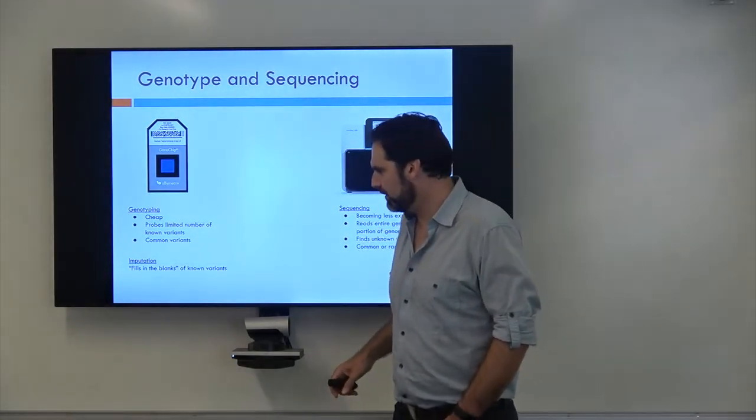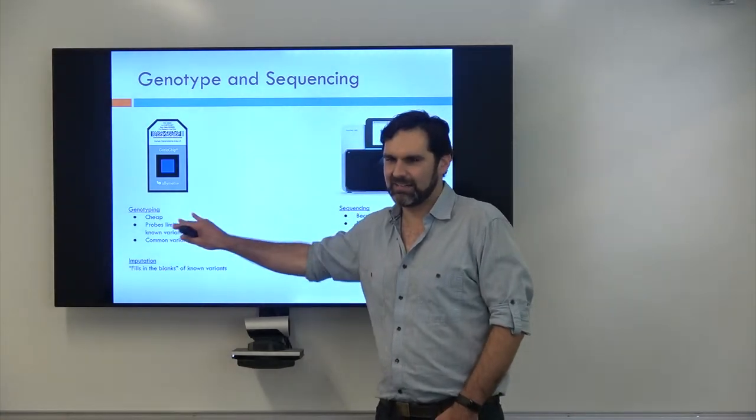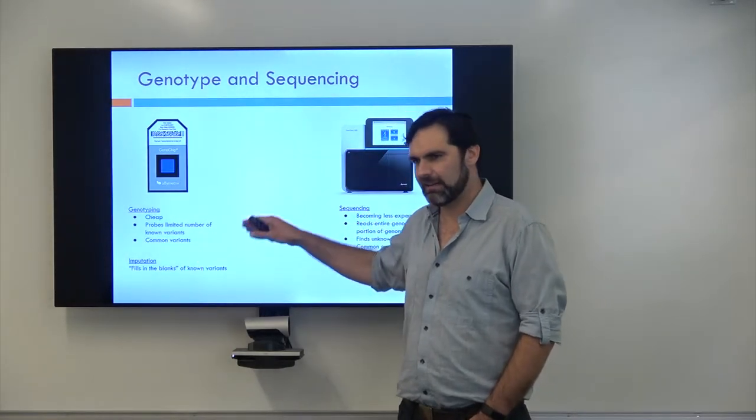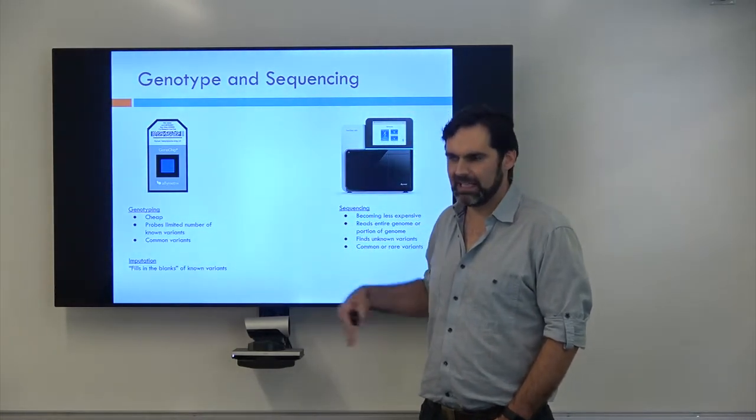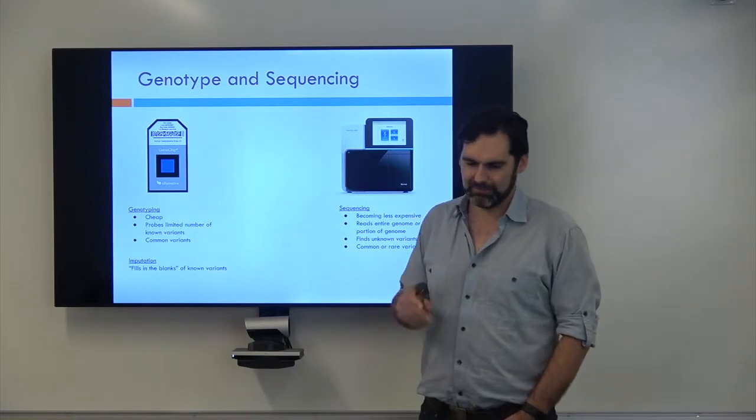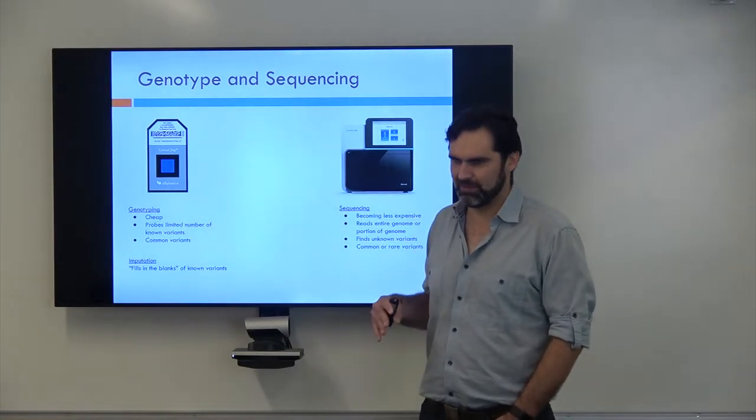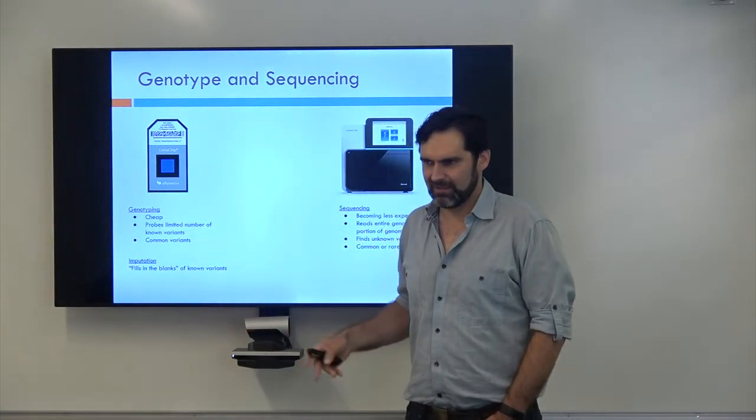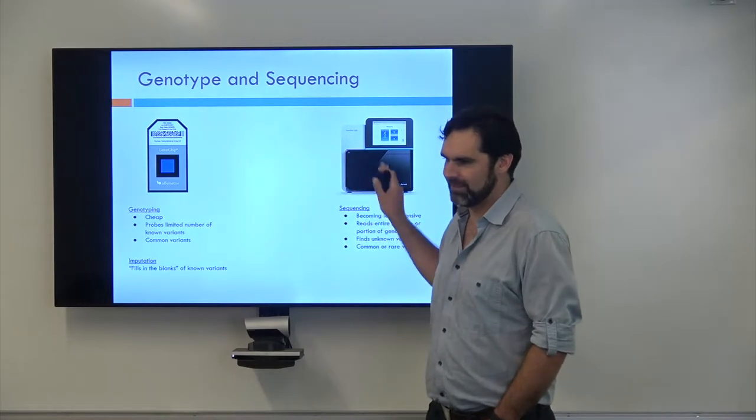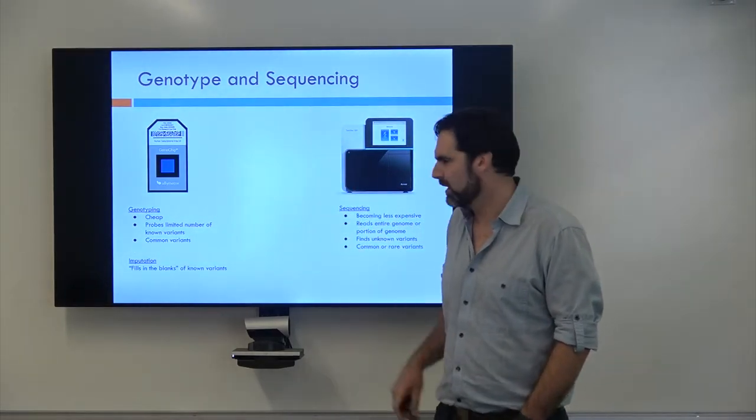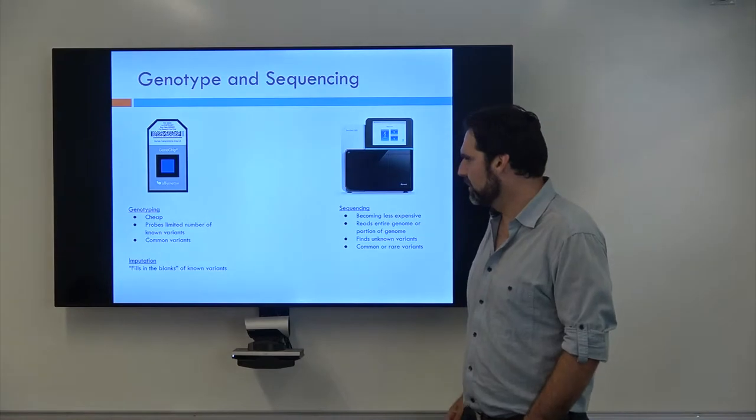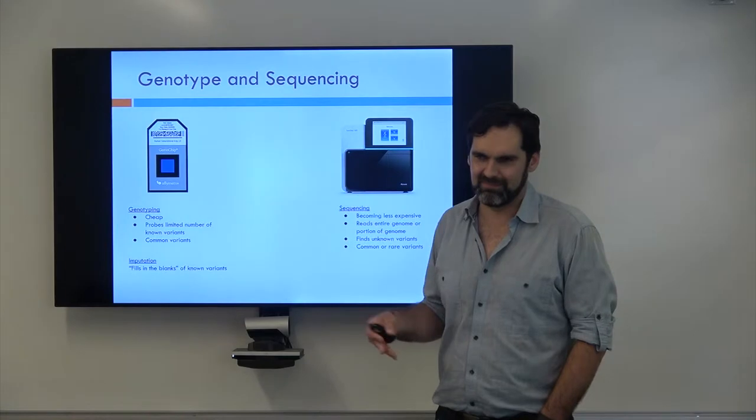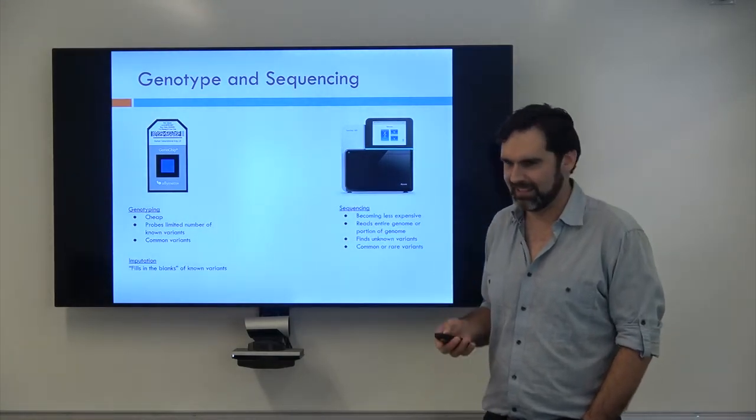So then us computer science people came up with this idea called imputation, which is a bridge between these. Basically it says, let's do this cheap genotyping and then we're going to fill in the blanks. And for any variant that we know about, we can usually fill in the blanks pretty well. So we don't actually have to measure it on the genotyping chip, but we can still know what it is. And so it moves you as if it was sequencing, but you still don't get things that have never been seen before. So if you hear genotyping or sequencing, it just means they read these people's genomes somehow, and that's how they got their data.